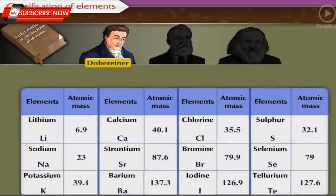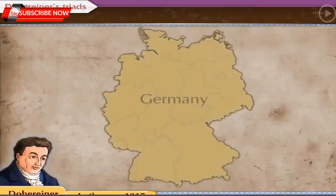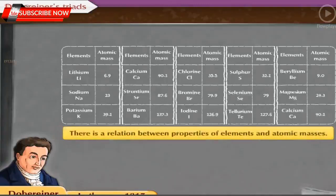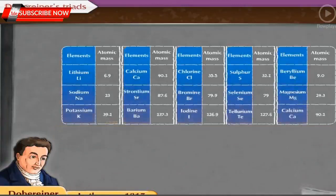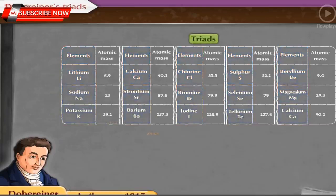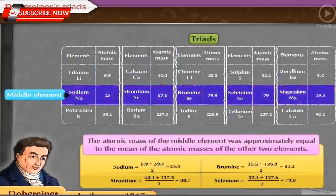Dobereiner was the first scientist who attempted to classify elements. In the year 1817, a German scientist, Dobereiner, suggested that there is a relation between properties of elements and atomic masses. He made groups of three elements, each having similar chemical properties, called triads. He arranged these triads in increasing order of atomic mass and showed that the atomic mass of the middle element was approximately equal to the mean of the atomic masses of the other two elements.